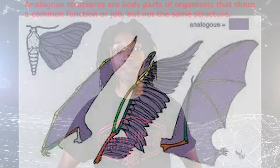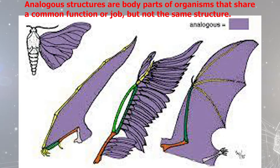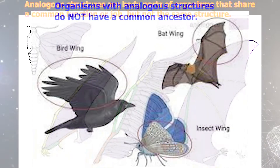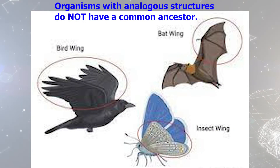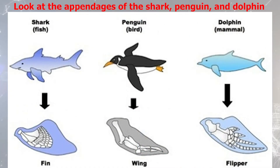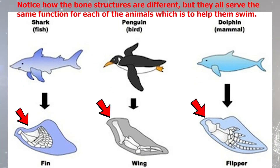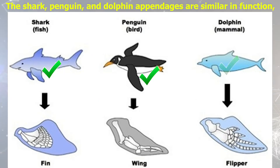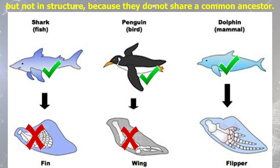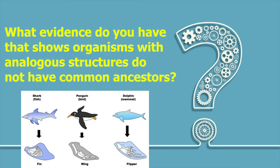Analogous structures are body parts of organisms that share a common function or job but not the same structure. Organisms with analogous structures do not have a common ancestor. For example, look at the appendages of the shark, penguin, and dolphin. Notice how the bone structures are different but they all serve the same function for each of the animals, which is to help them swim. The shark, penguin, and dolphin appendages are similar in function but not in structure because they do not share a common ancestor. Question: what evidence do you have that shows organisms with analogous structures do not have common ancestors?